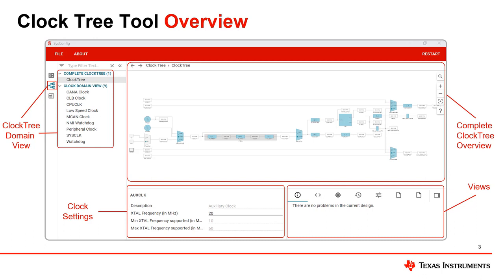Using and finding this tool is easy. It can be found in the ClockTree tab in the sysconfig file of any CCS project. On the left there are tabs for the different views. In the complete ClockTree view, we see every clock domain of the F28003 microcontroller and can clearly see how any given elements are mapped between each other and to the entire device.